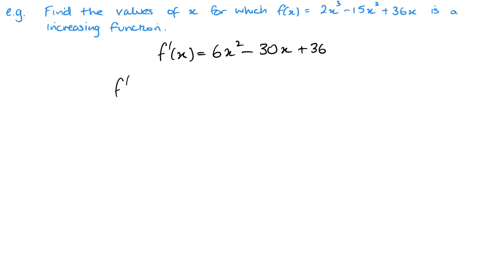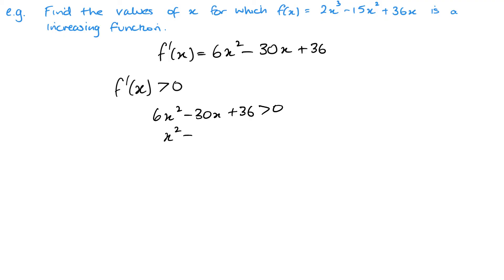For an increasing function we want the derivative to be greater than zero. So 6x² − 30x + 36 > 0. We can divide through by 6 to make life easier, giving x² − 5x + 6 > 0. Next, factorize: we get (x − 2)(x − 3) > 0, with both factors negative.